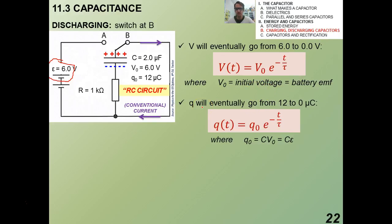Now, Q will eventually go from 12. Remember, we saw 12 before was that maximum charge that the plates acquired. Eventually, it goes from 12 to 0 microcoulombs, where in this case, Q_0 would be C times the EMF of the battery, which would be the capacitance, which is 2 microfarads times 6 volts. Whatever that is, I guess that gives you 12, right? So that's what happens to V of T and Q of T for a discharging capacitor.